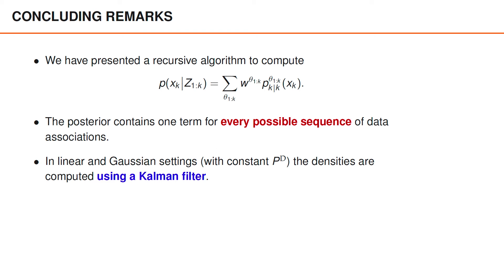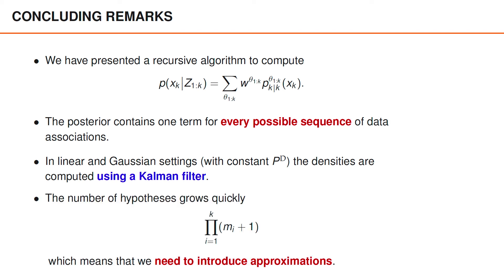Even when the models are not linear and Gaussian, we can often use an extended Kalman filter or some other type of Gaussian filter to approximate the densities and the weights. This is very useful, but since the number of hypotheses grows very quickly, we still need to introduce additional approximations. And that is the upcoming topic.